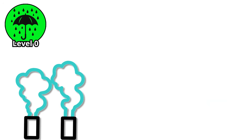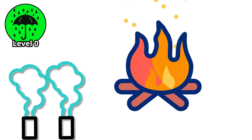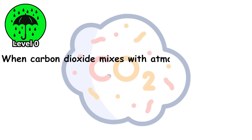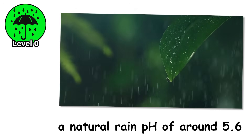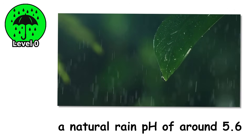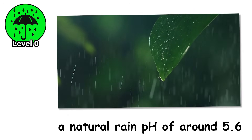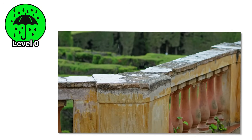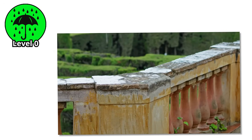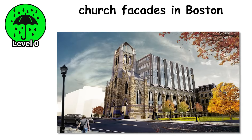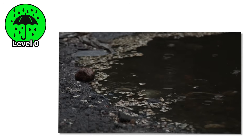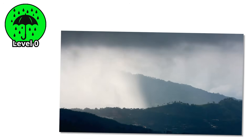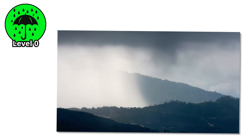The result: a natural rain pH of around 5.6. It doesn't sting, it won't burn. But given enough time, it will eat away marble, sandstone, even certain metals. Statues from ancient Greece, church facades in Boston, and weathered gravestones in Scotland all bear the slow fingerprint of Level 0. This is the baseline. Normal. The calm before the storm.